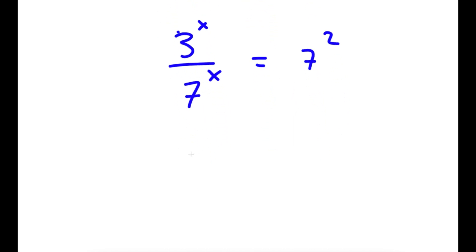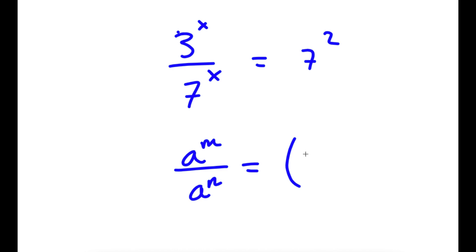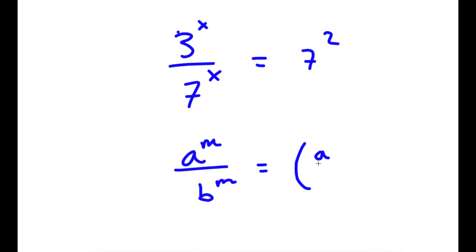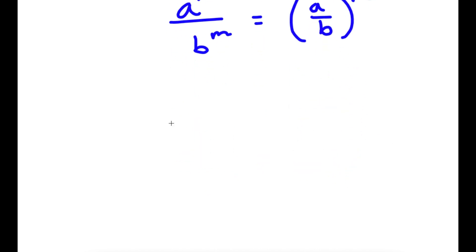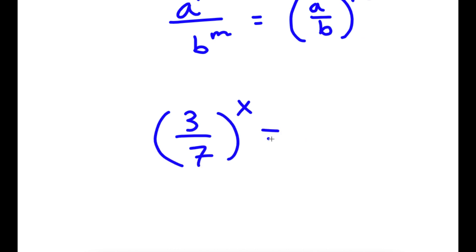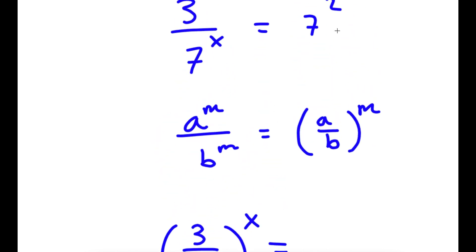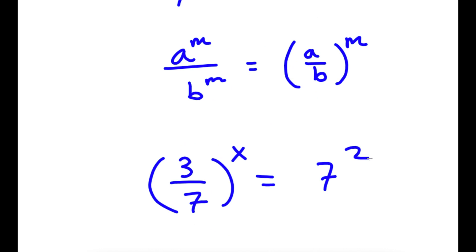Now if I have something in the form a to the power of m over b to the power of m, this is equal to a over b to the power of m. So 3 to the power of x over 7 to the power of x is going to equal 3 over 7 to the power of x, which is equal to 7 squared.